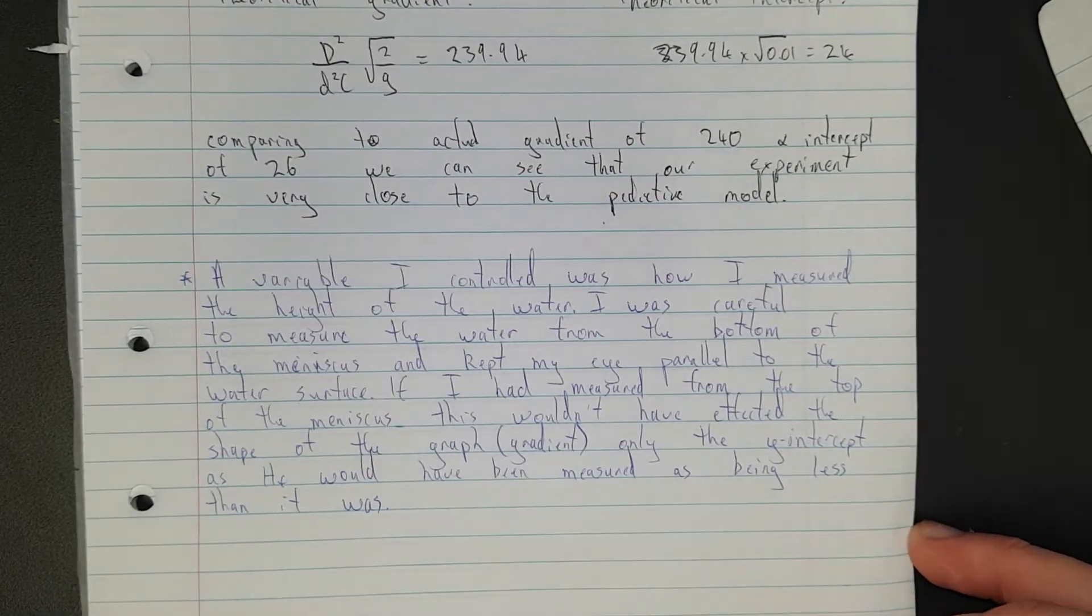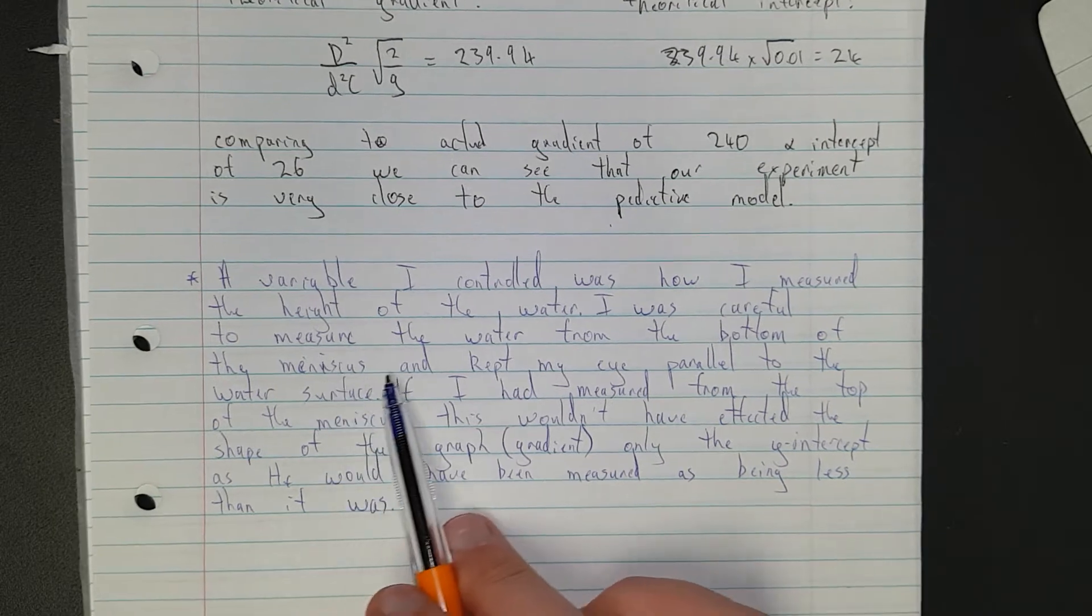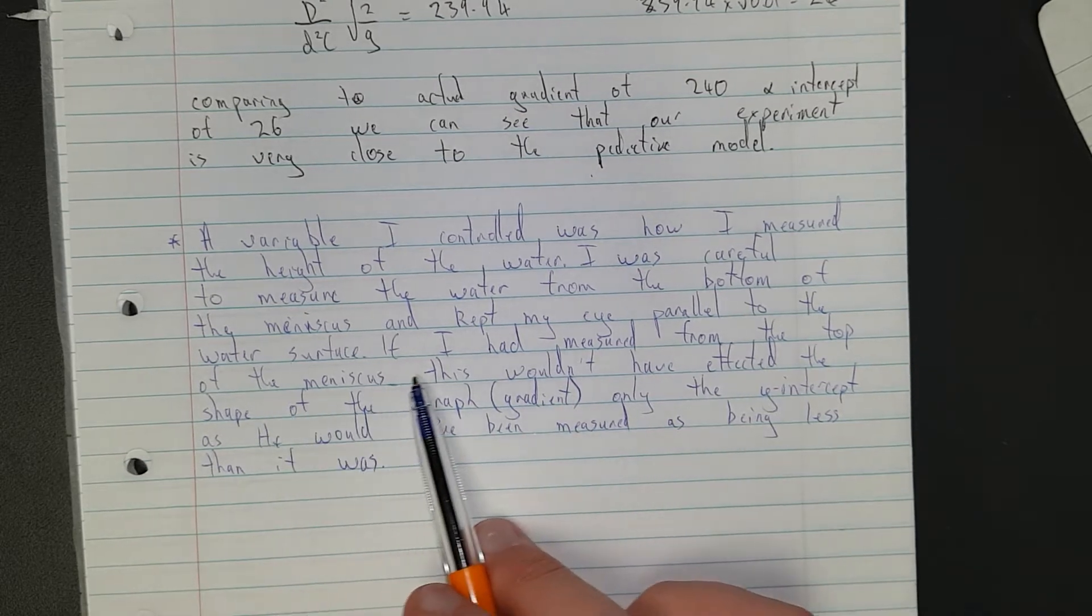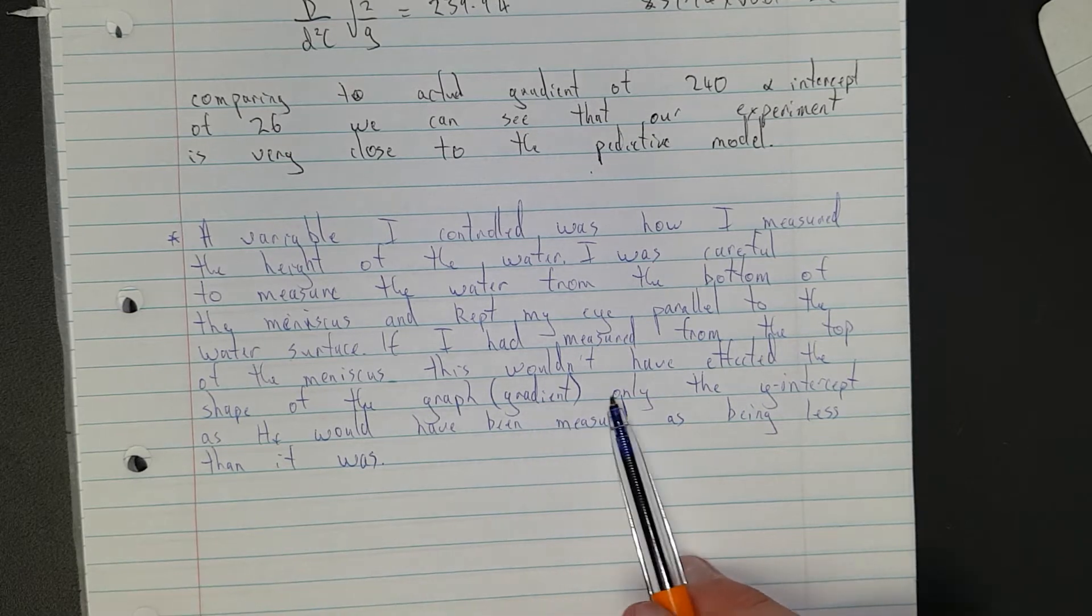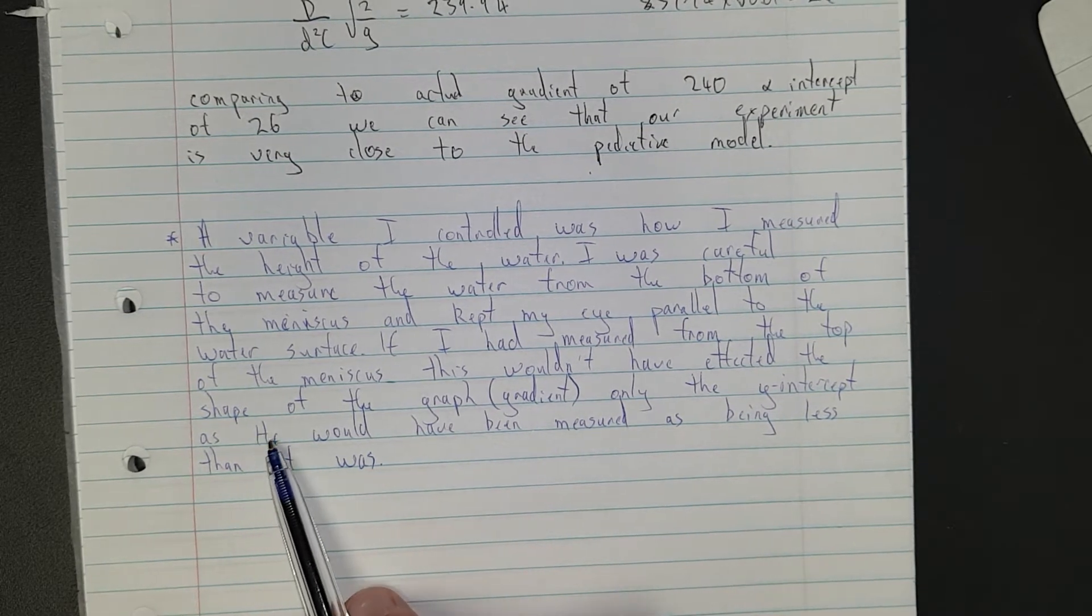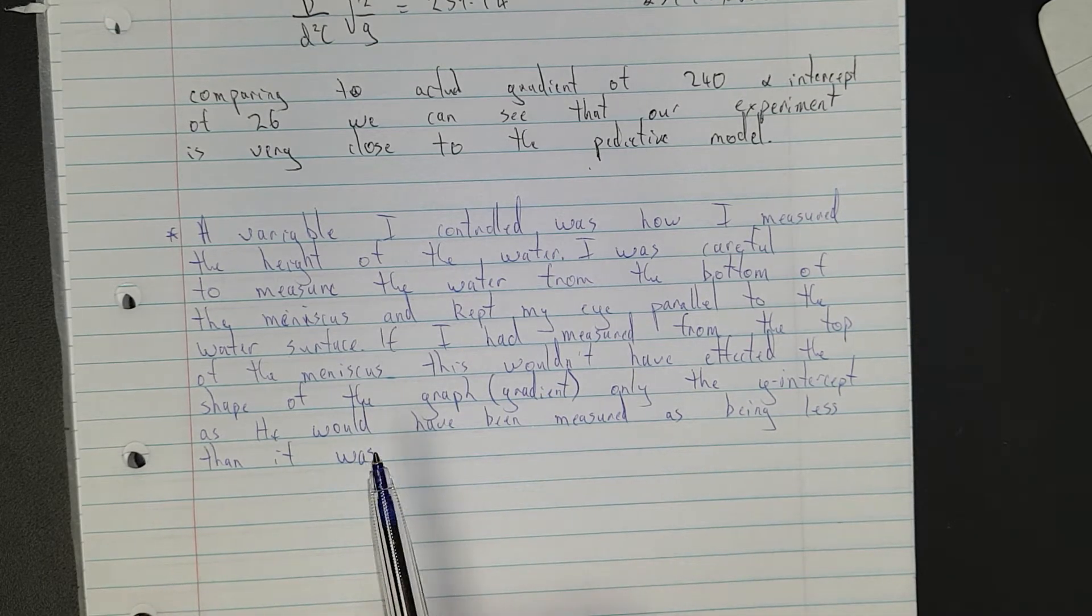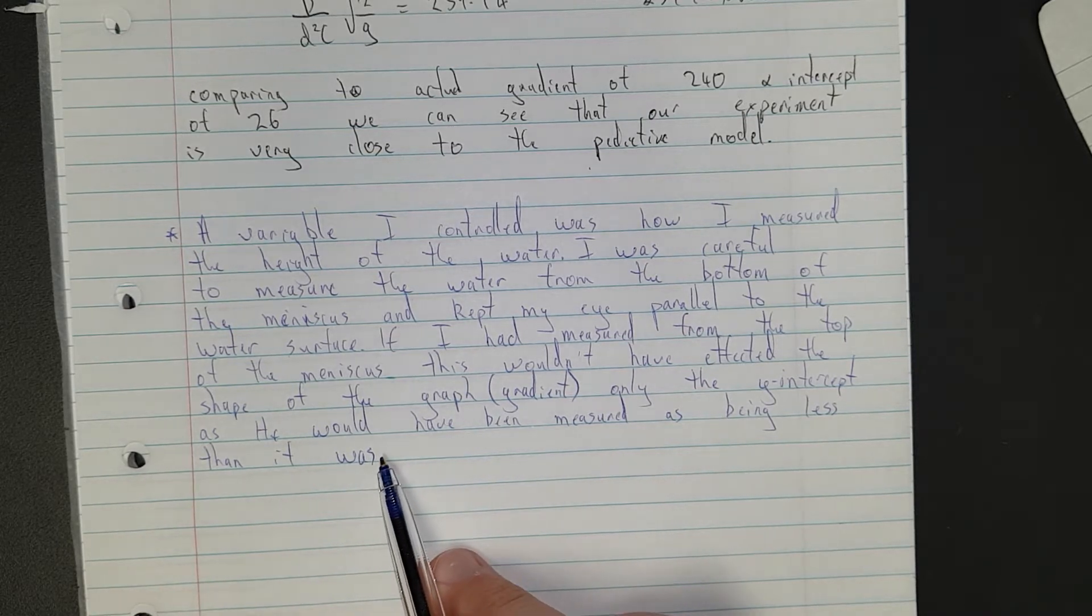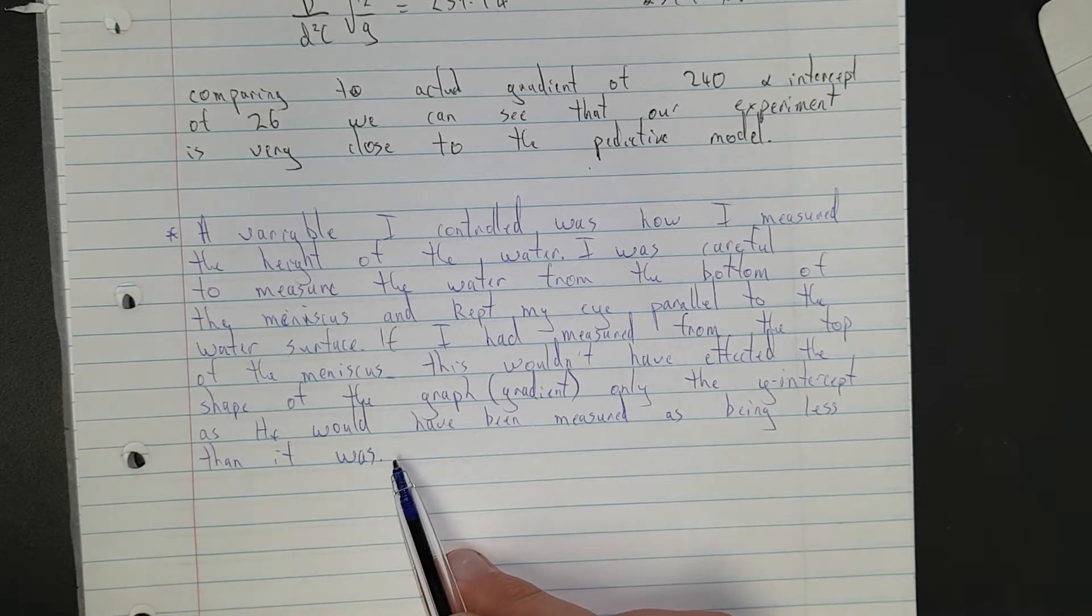So what I've said is, a variable I controlled was how I measured the height of the water. I was careful to measure the water from the bottom of the meniscus and kept my eye parallel to the water surface. If I had measured from the top of the meniscus, this wouldn't have affected the shape of the graph (gradient), only the y-intercept. When you measure water, especially with the water in that water bottle, it was going up the sides quite a bit. So you have to measure it at the bottom of the meniscus, not at the top. Otherwise you'd be over measuring it every single time.